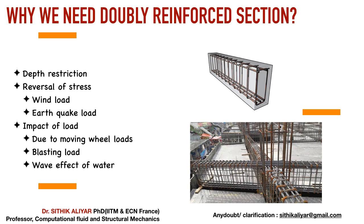Consider a bending moment is very high, but in your building you cannot provide such a large depth. In a residential or apartment building, maximum beam depth is typically 300 to 400 mm. There will always be a restriction on beam depth — if you increase it too much, it will encroach above windows and disturb everything. The designer or architect will always specify a maximum allowable depth. To handle a heavy bending moment within a restricted depth, you must provide extra reinforcement on the compression side as well. That will reduce the required depth.